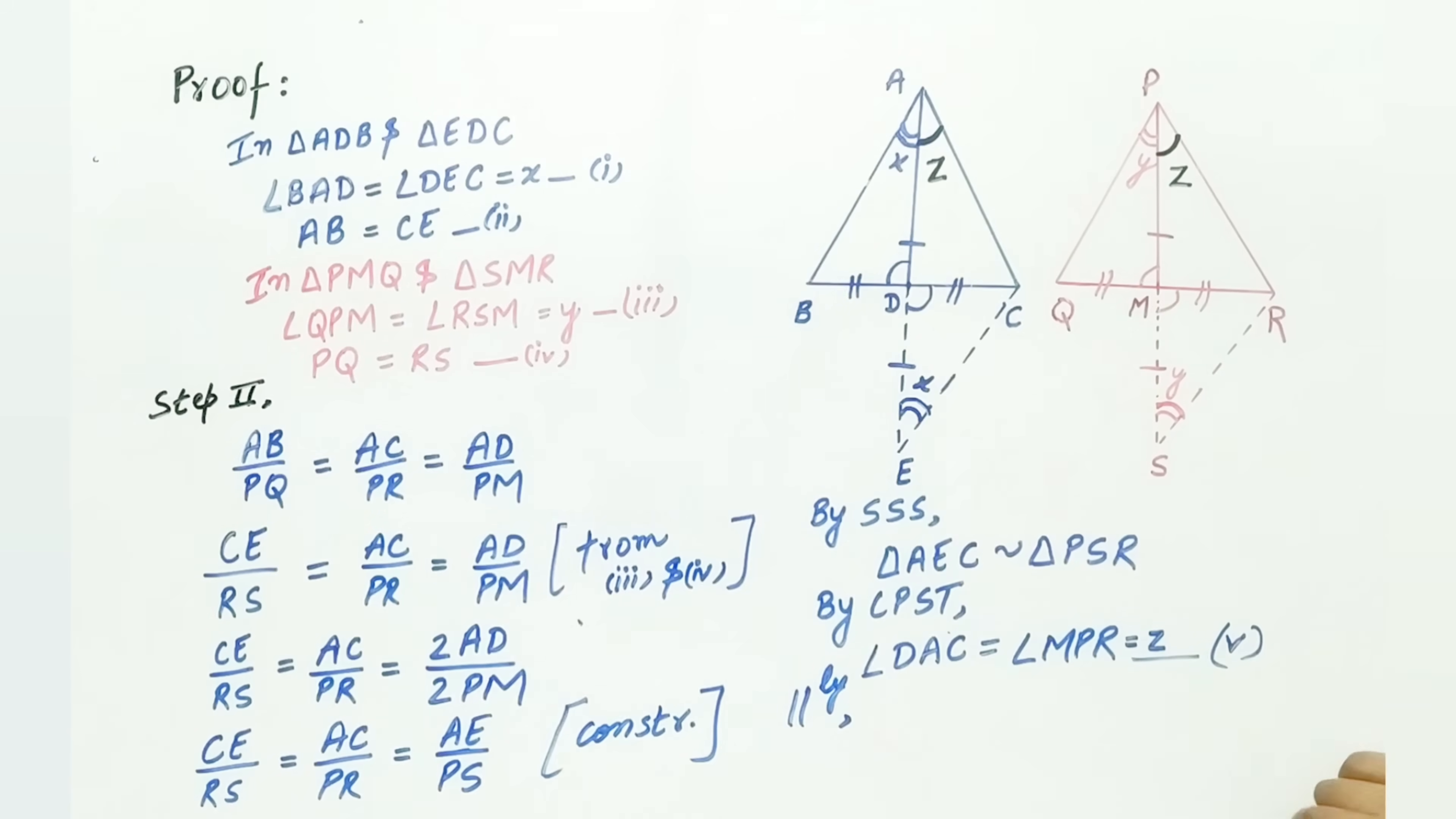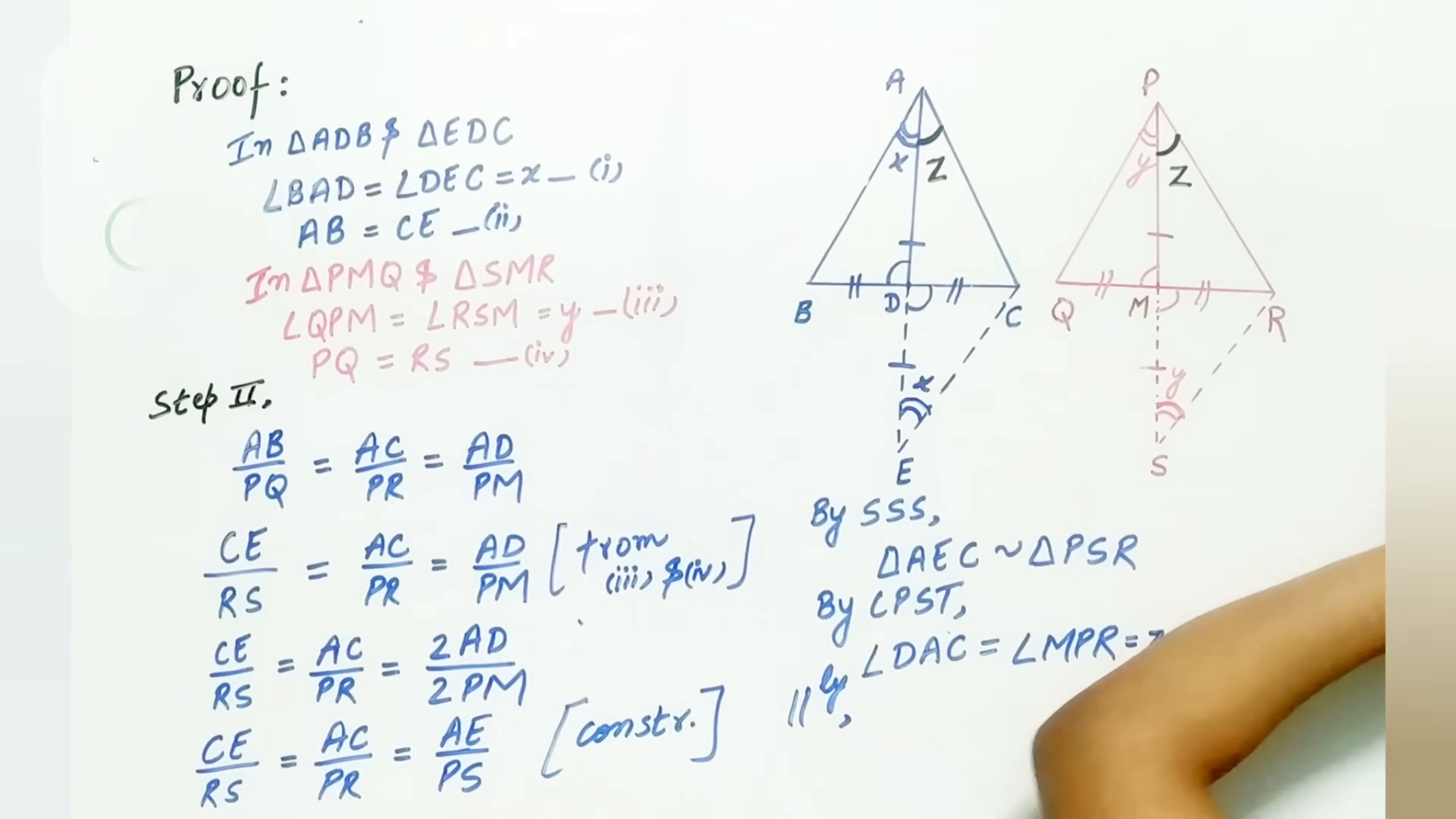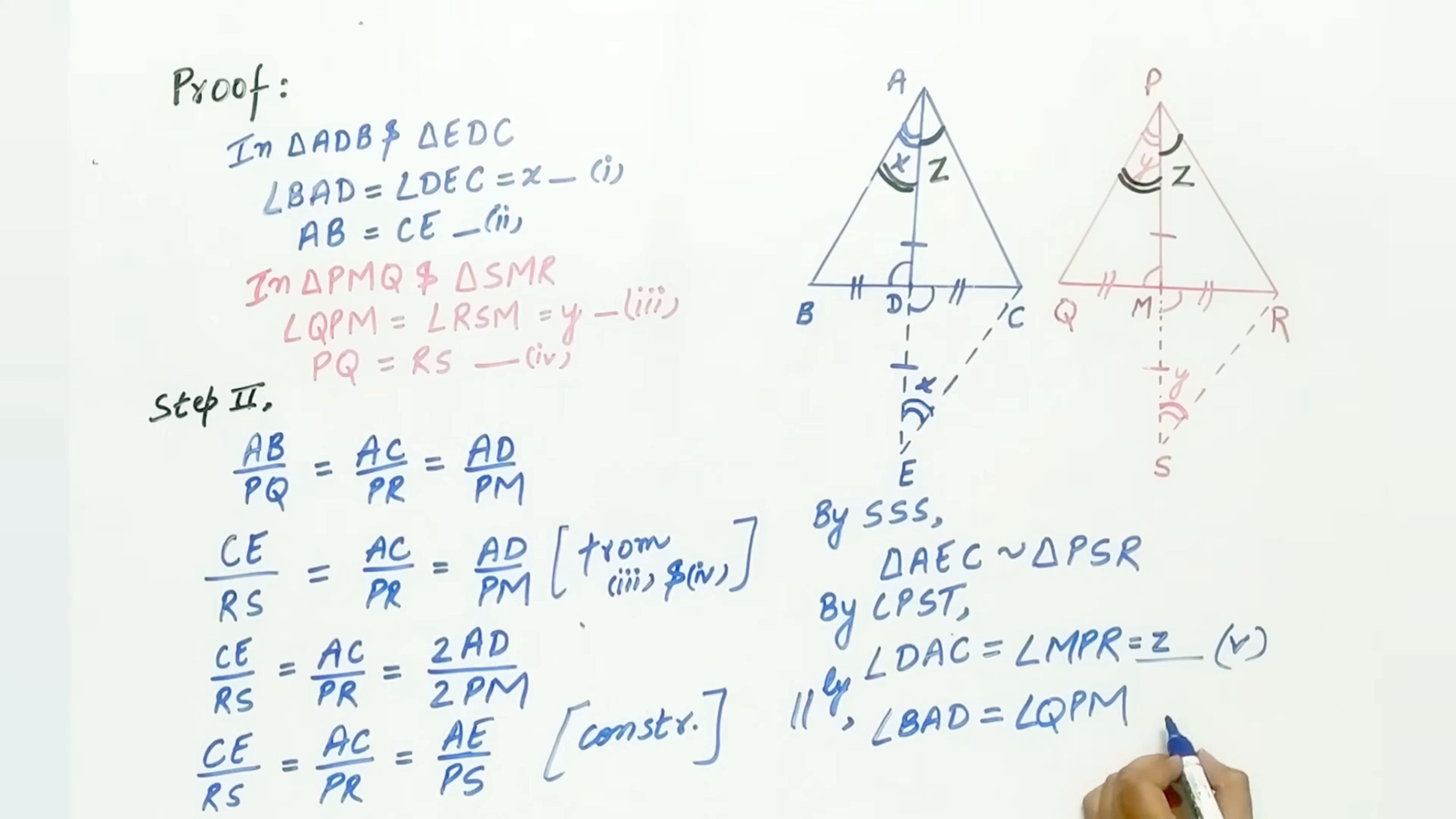Now, similarly, we can prove that angle BAD is equal to angle QPM. And let it mark as 6th equation.